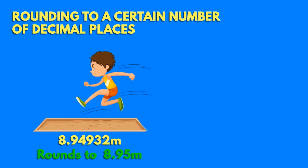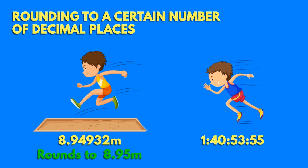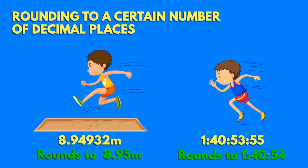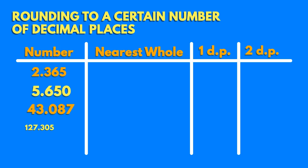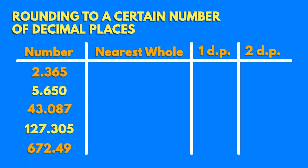There may be times when rounding to a certain number of decimal places is needed. In athletics, long jump distances are measured to two decimal places, whereas running times are measured to the nearest hundredth of a second for a greater degree of accuracy. Have a go for yourself. Pause the video now and try this.